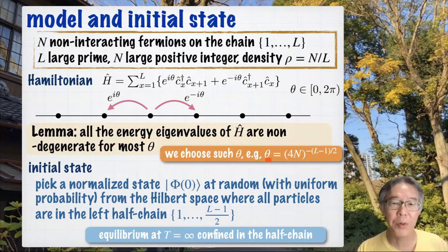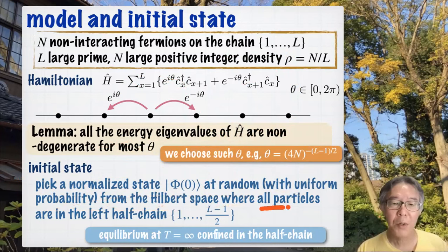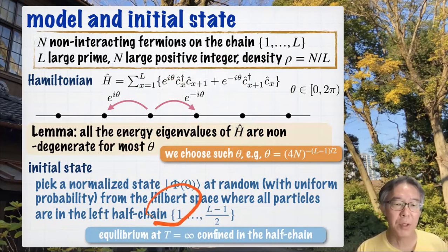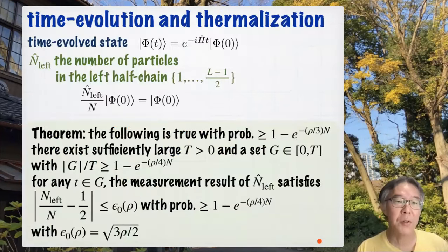So suppose that we take this θ — that's enough. Then we pick our initial state randomly. We pick a normalized state Φ₀ at random with uniform probability from the Hilbert space in which all particles are in the left half chain. So the right half chain is just empty — a vacuum. Since we are considering a lattice system, this corresponds to taking an equilibrium state at infinite temperature, but with all particles confined in the half chain. This is a very non-equilibrium initial state.